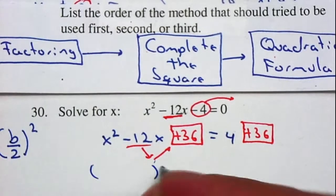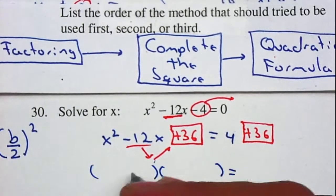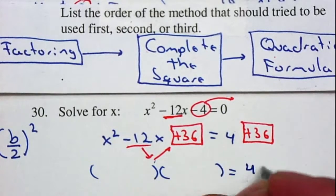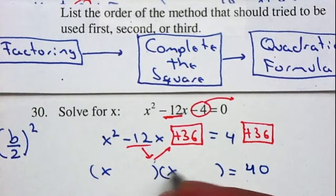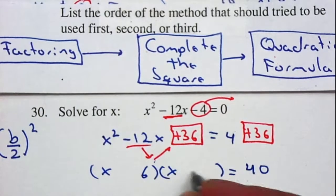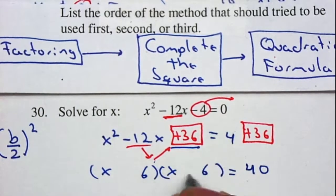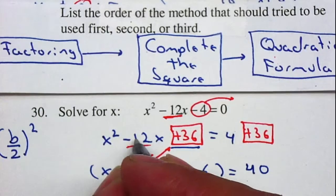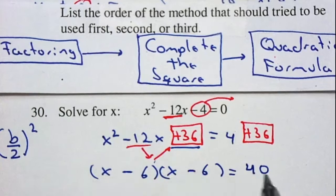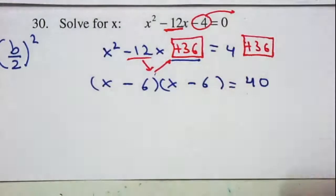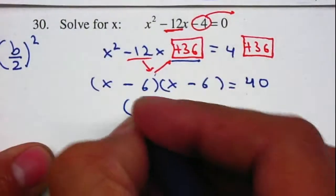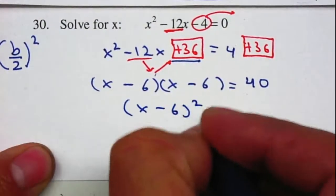Using double parenthesis, I'm going to factor the left side, and on the right, 4 plus 36 gives me 40. Factors of x² are x and x. Factors of 36 are 6 and 6. Since this is positive, they have the same sign, and they need to add to negative 12, so both are negative. Since they're exactly the same, I combine them: (x - 6)² = 40.